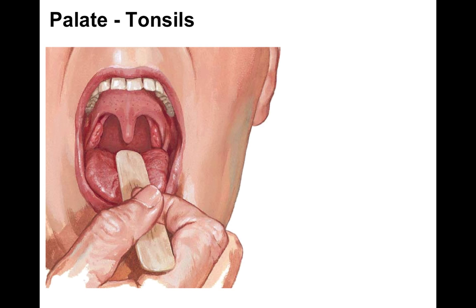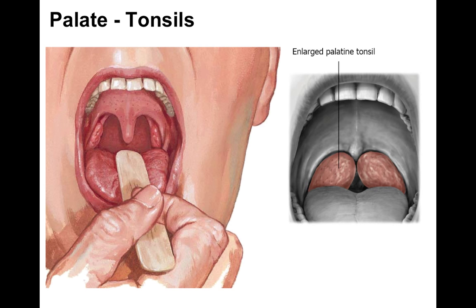And so there are our palatine tonsils, and this is what happens when they become enlarged — they block off a good pathway for swallowing and for airways.